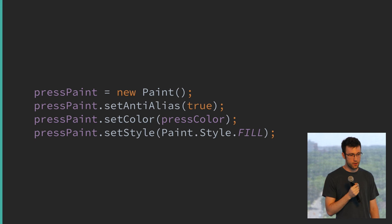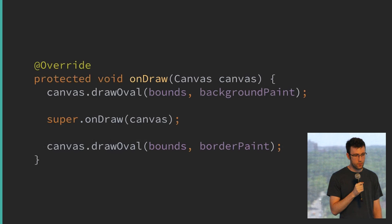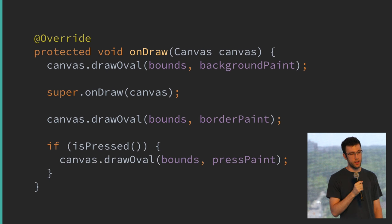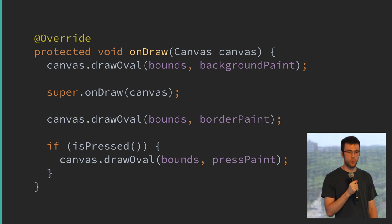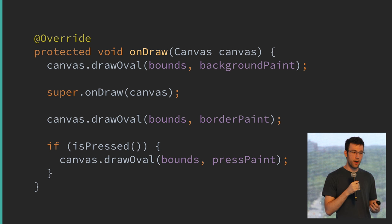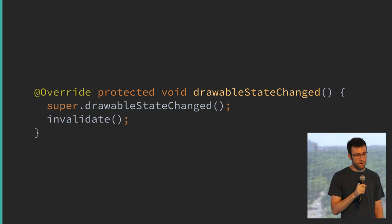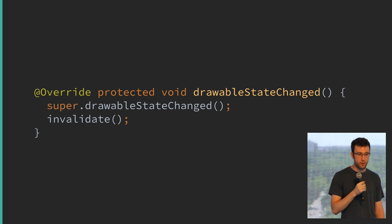For the pressed state, same thing — set the paint, set the fill. In onDraw, if your view is currently pressed, draw the oval on top. As is, this isn't going to work because when you press a view, Android isn't going to invalidate it and cause onDraw to be called again. You can handle that yourself in the onDrawableStateChanged method — this gets called any time the state of the view changes, like pressed or active.